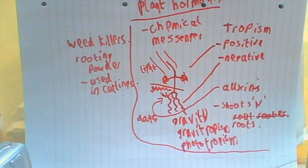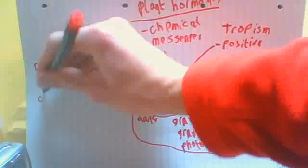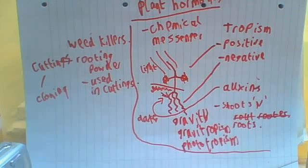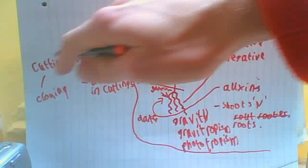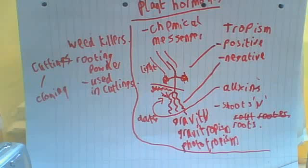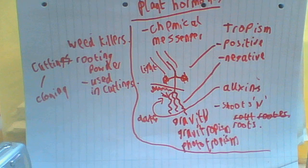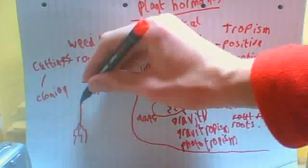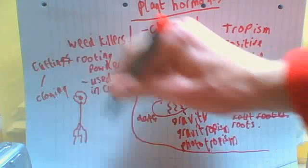Another example is rooting powder. Cuttings are a way of cloning plants — cloning is where you copy something and it has the exact same genetic information as the original. Supposing you've taken a cutting from a plant and it only has a tiny bit of root, the rooting powder will rapidly increase the rate of growth of the roots on that cutting, so your flower ends up growing much more quickly.